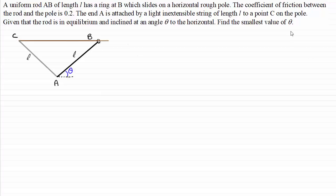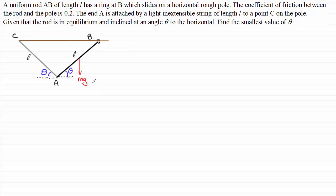The first thing we need to do is label up the diagram. Being an isosceles triangle, the angle that the string makes with the horizontal must also be theta — mark that in as theta. For a uniform rod, let's say its mass is M, so its weight MG acts vertically downward at the midpoint. We also have the tension T in the string acting along the string direction.